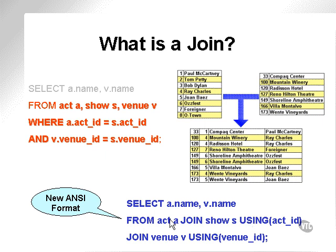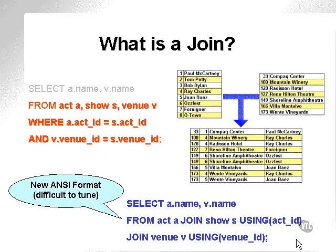In the ANSI format, we say: FROM ACT, JOIN to SHOW using a field, JOIN to VENUE using a field. This is the Oracle proprietary format; this is the ANSI format. The only problem is potentially that the ANSI format is difficult to tune with an Oracle database.